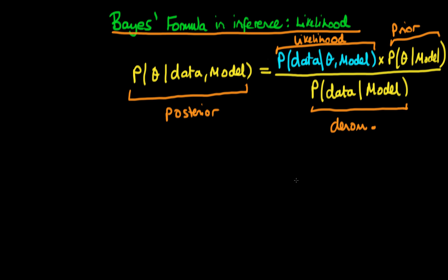I'm going to introduce how we use Bayes' formula to do statistical inference by means of an example. The example may seem a little contrived, but it would be very easy to extend it to encompass some relatively real-world examples. Imagine that we are trekking through the Amazon rainforest and we encounter three individuals who have come from a particular tribe.